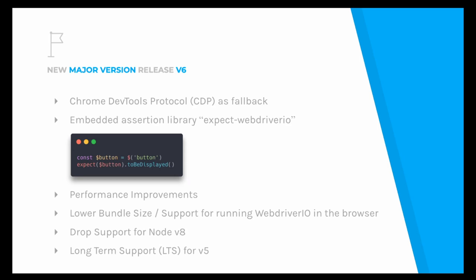We improved the performance of the core packages in general, increased the speed of element fetching, reduced the bundle size, and we want to prepare to allow WebDriver.io to run in the browser. The most important part of the version 6 release is that we dropped support for Node version 8. We also announced that we want to keep version 5 as a long-term supported version because many people had to struggle through the upgrade and don't want to update again right away.